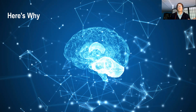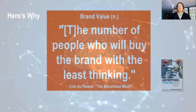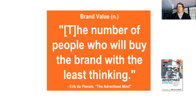The brain tends to operate in two different ways — the fast and the slow, if you know that book, Thinking Fast and Slow by Daniel Kahneman. And advertising responds like that as well. In the Advertised Mind — I recommend this book — Eric du Plessis writes a great book around the impact of advertising on the brain and neuroscience.